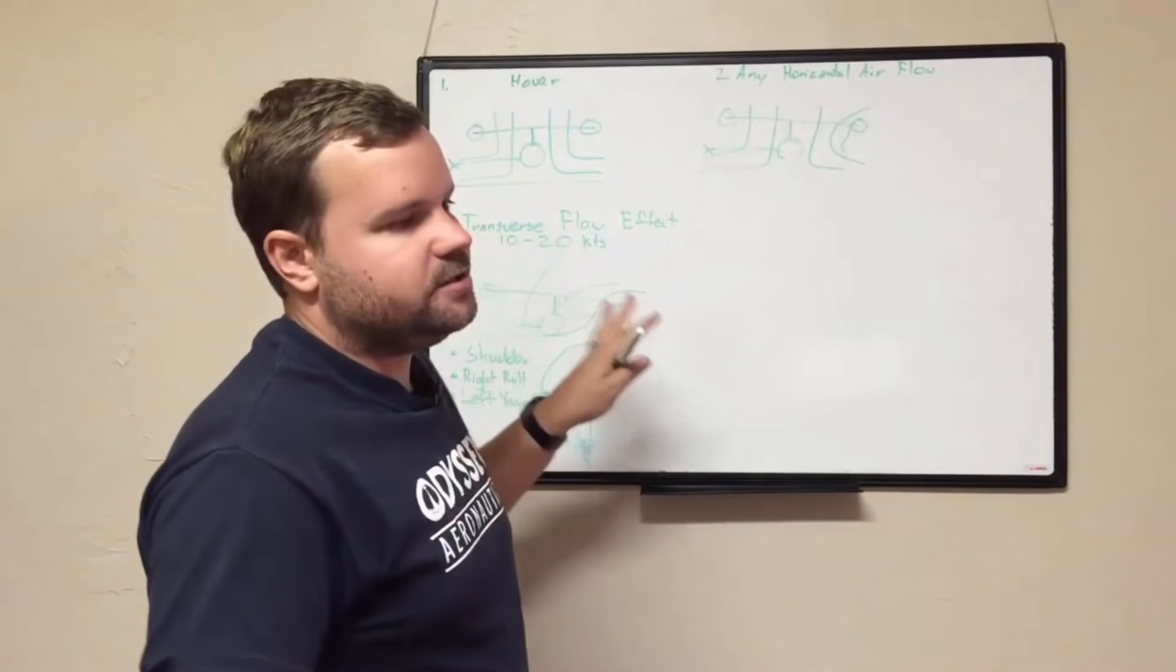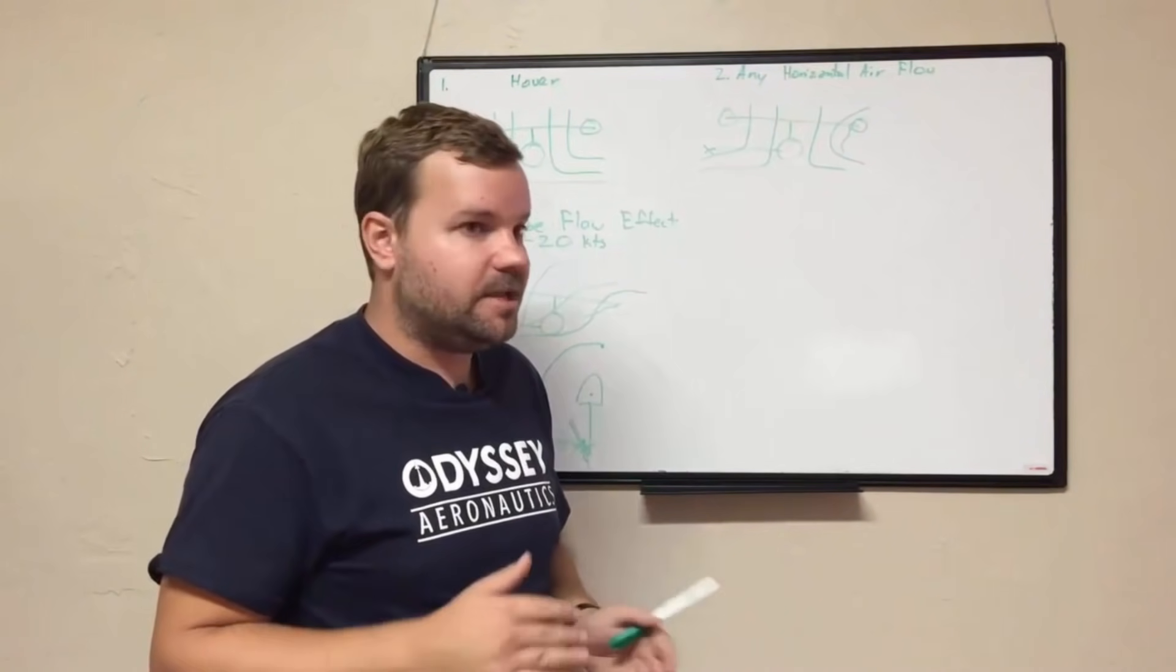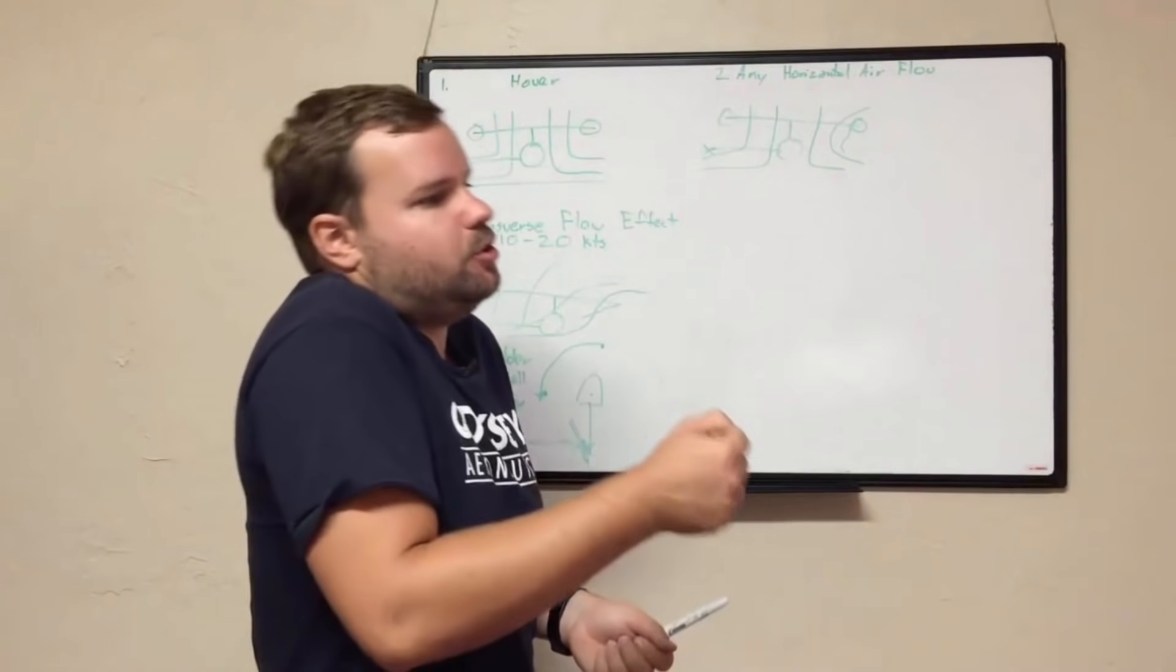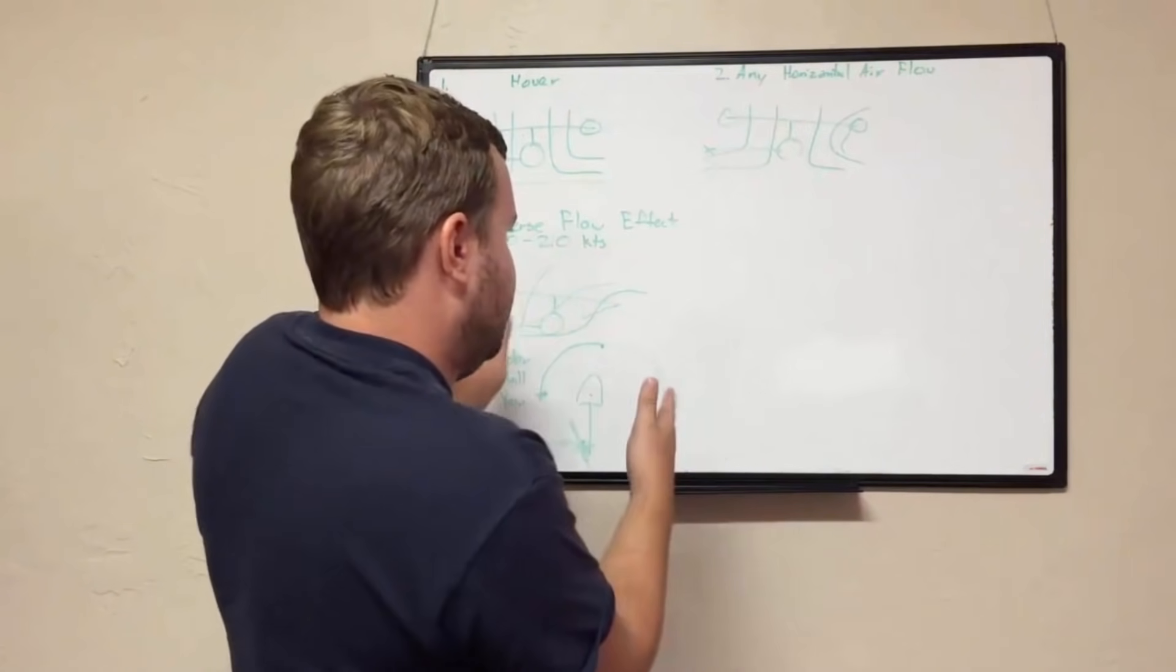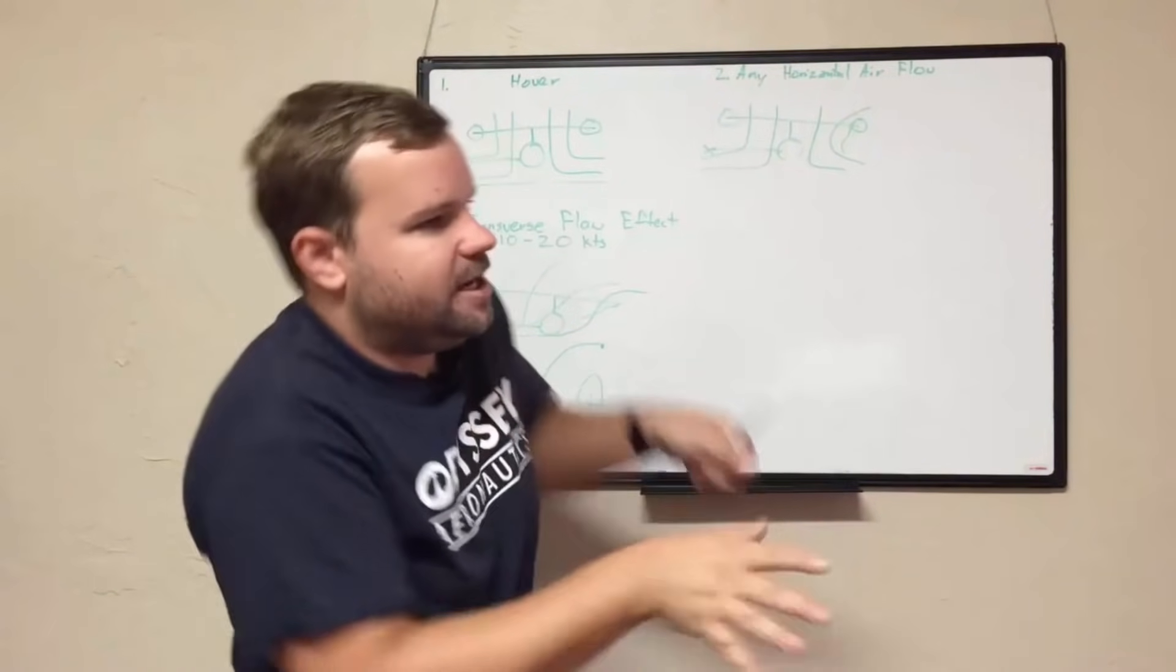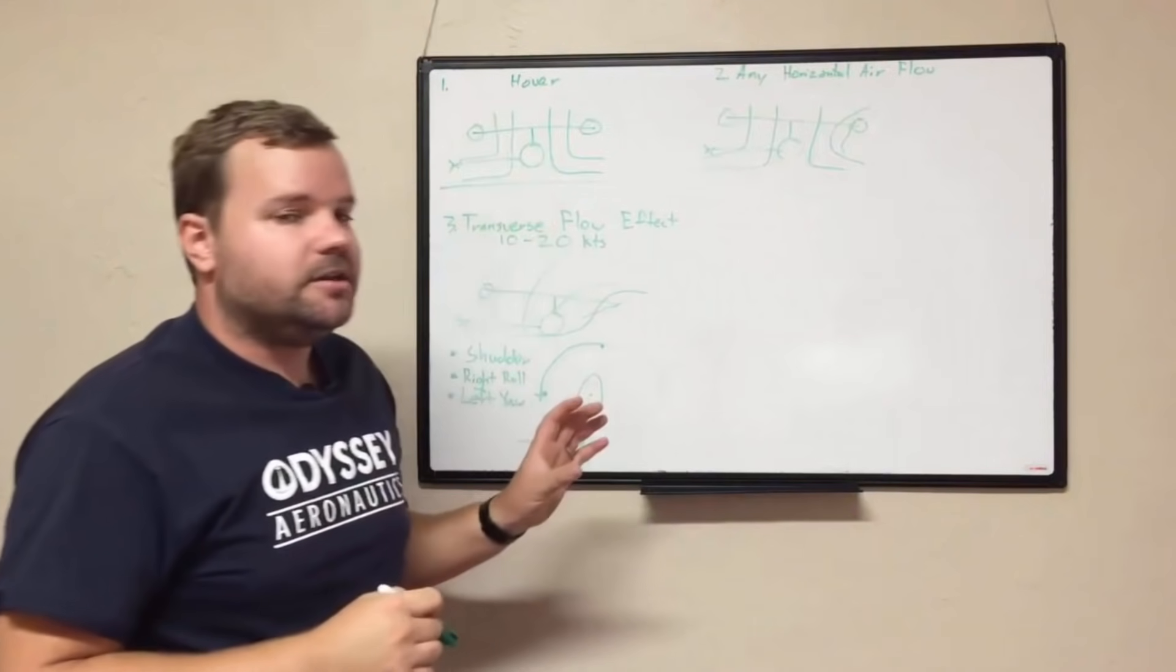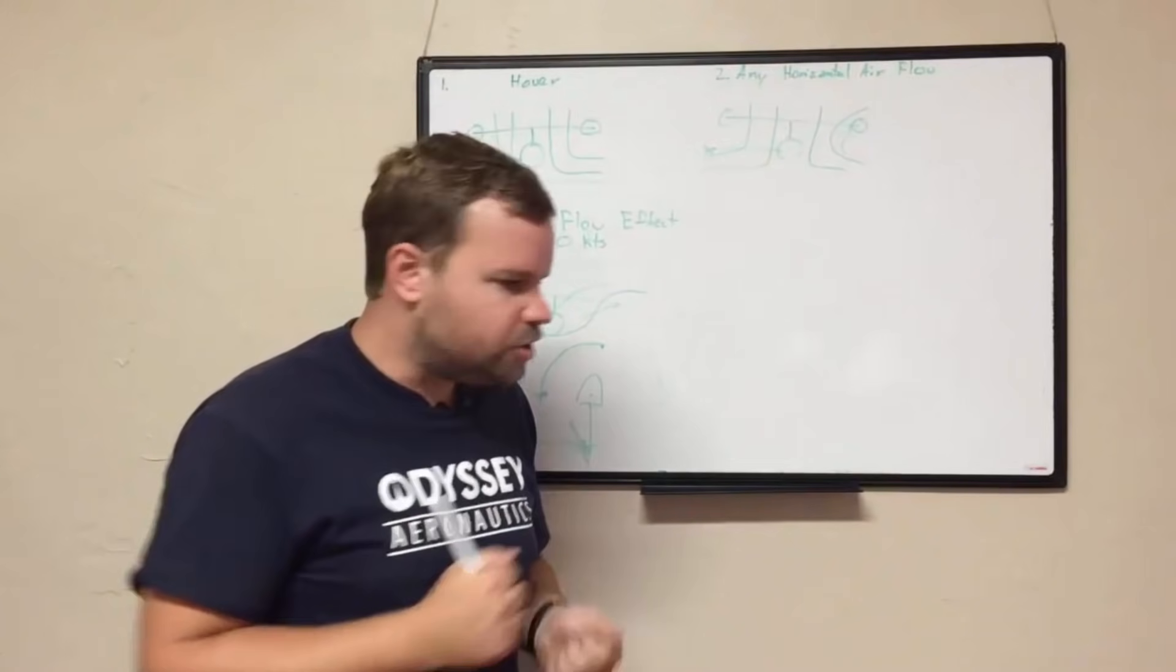This is really a funky transition that takes a while for students to get through because they're not anticipating it. The nose will kind of dip up and they weren't anticipating, so they'll nose over. Then it'll roll to the right so they'll push left, and then the tail rotor will swing you to the left so then you're too late pushing right pedal and you get this kind of fish tailing weird thing until you've blown through it.